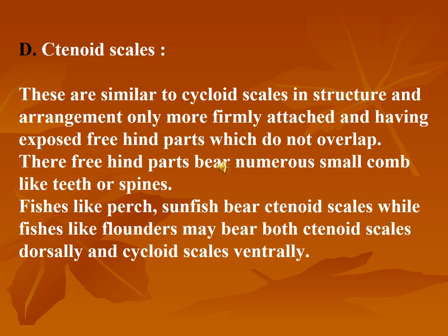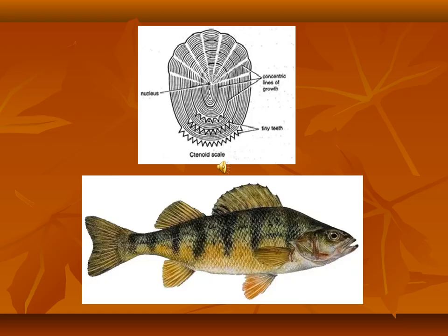Ctenoid scales are the characteristics of modern higher teleosteans. They are more firmly attached, and their exposed free hind parts, which are not overlapped, bear numerous small comb-like teeth or spines. You can see the growth lines in ctenoid scales. Perch and sand fish are teleost fishes carrying these types of scales.